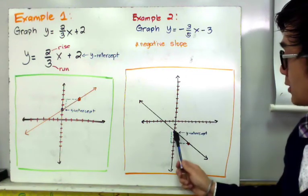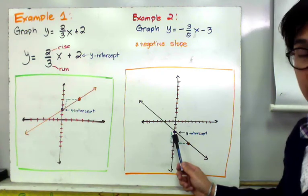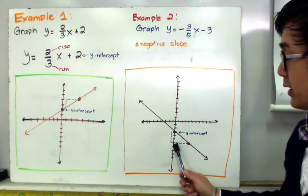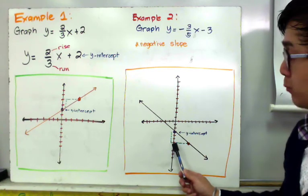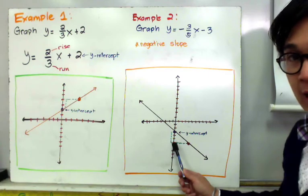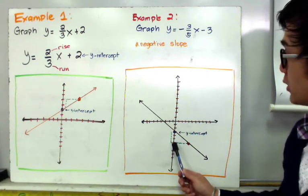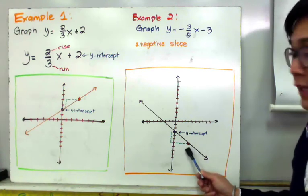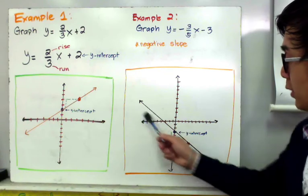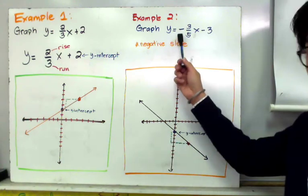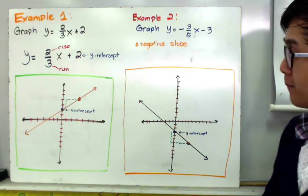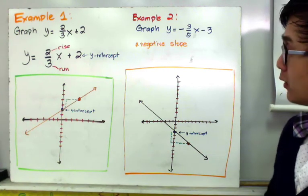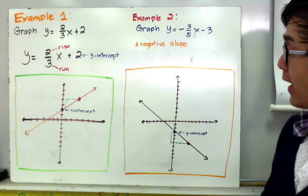The y-intercept of negative 3 is plotted here, and the slope is -3/5. Since the slope is negative, instead of going up we move downwards — 3 units going down — and we always move to the right for the second point. We move 5 units to the right. Connecting the first and second points gives us the graph of y = (-3/5)x - 3. Remember, never move to the left when graphing in slope-intercept form. The difference between positive and negative slope is that you go either up or down, but always move to the right.